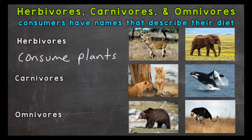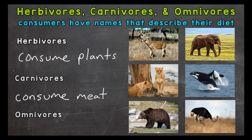Next we have carnivores. Carnivores are organisms that eat meat. Just like herbivores, carnivores range in size. Our examples are lions and orcas, or killer whales. For an example diet, let's take a look at lions. They like to eat zebra, antelope, wildebeest, and other animals — so all meat-based.